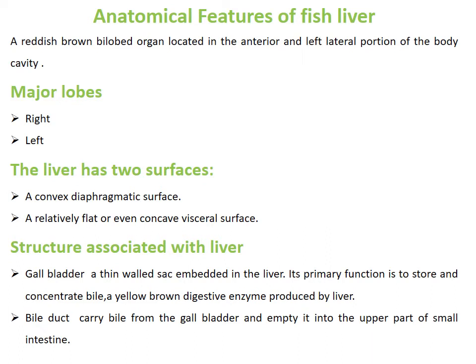Now let's look at some anatomical features of the fish liver. It is a reddish-brown, bi-lobed organ located in the anterior and left lateral portion of the body cavity. The fish liver is reddish-brown in color and is bi-lobed, anteriorly located in the cranial region, as already discussed.